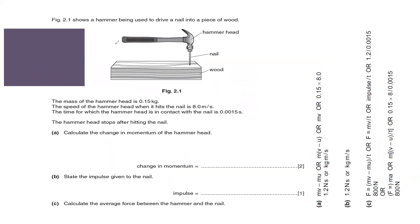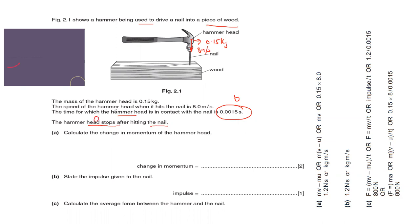Another question: figure 2.1 shows a hammer being used to drive a nail into a piece of wood. The mass of the hammer head is 0.15 kg and the speed when it hits the nail is 8 meters per second. The time for which the hammer head is in contact with the nail is 0.0015 seconds. The hammer head is stopped after hitting the nail, so the final speed is 0.